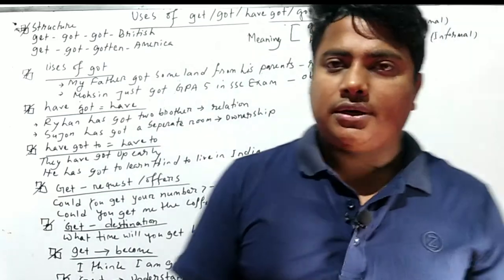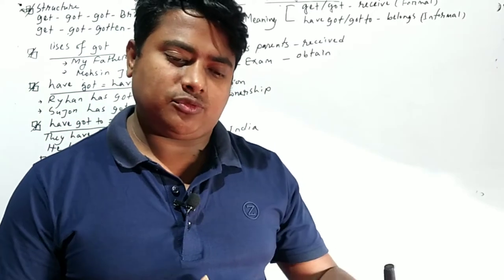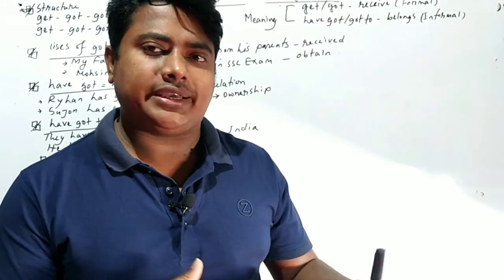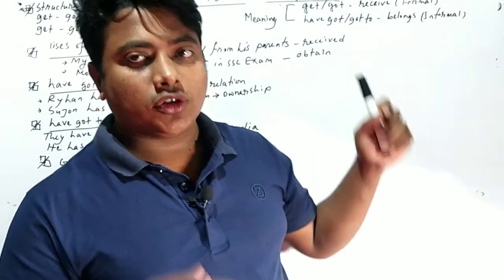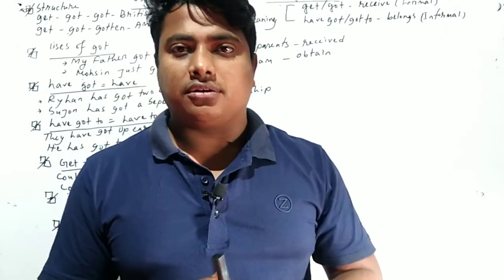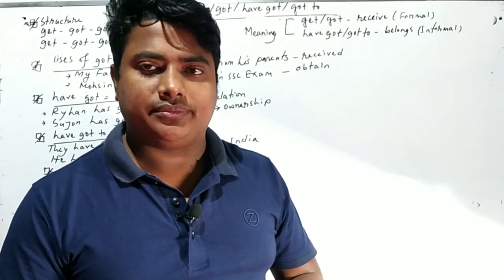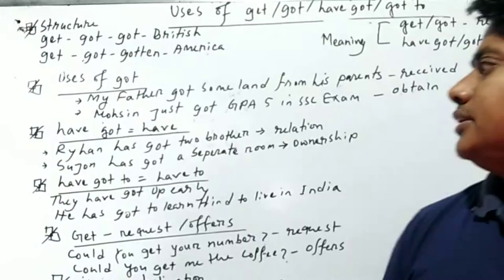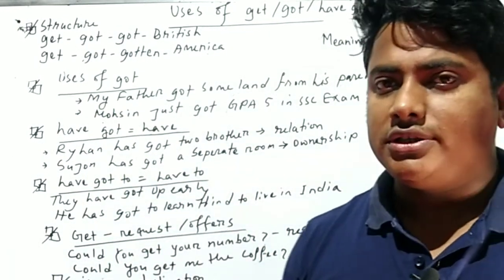In formal sense, we use get-got. Have got or got to is used in informal sense to express ownership or belonging. To express ownership, we use have got or got to. Now let's learn with practice the uses of got.